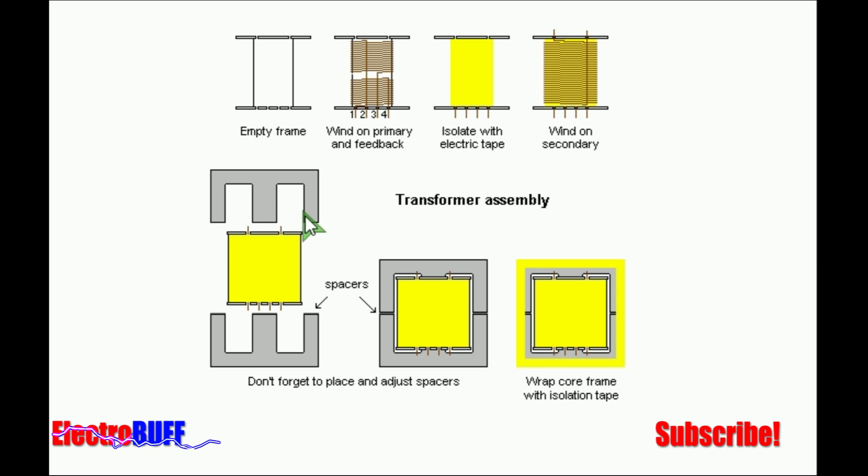Then when inserting the core of the transformer, you need to put some spacers. You can just put a small piece of tape. This will prevent the core from saturating and it will allow the core to easily oscillate. Then you will need to press the entire core together by putting a layer of tape all around it.